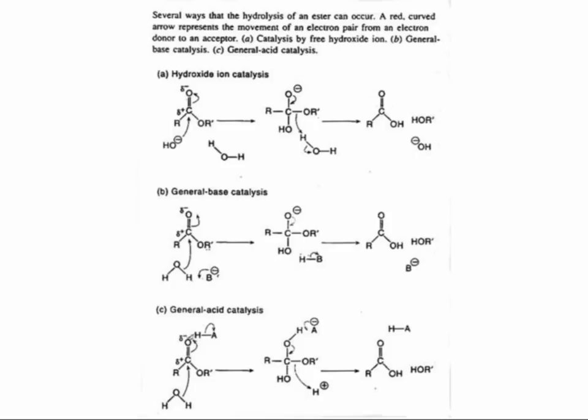Panel B shows the same reaction in the presence of a base, B-. The reaction is facilitated because the base strips a proton from water and thus provides a hydroxyl ion much faster. However, because the hydroxyl ion is higher in a base solution the hydrogen ion concentration will be lower, so the reaction components that require acid catalysis will be slowed down.